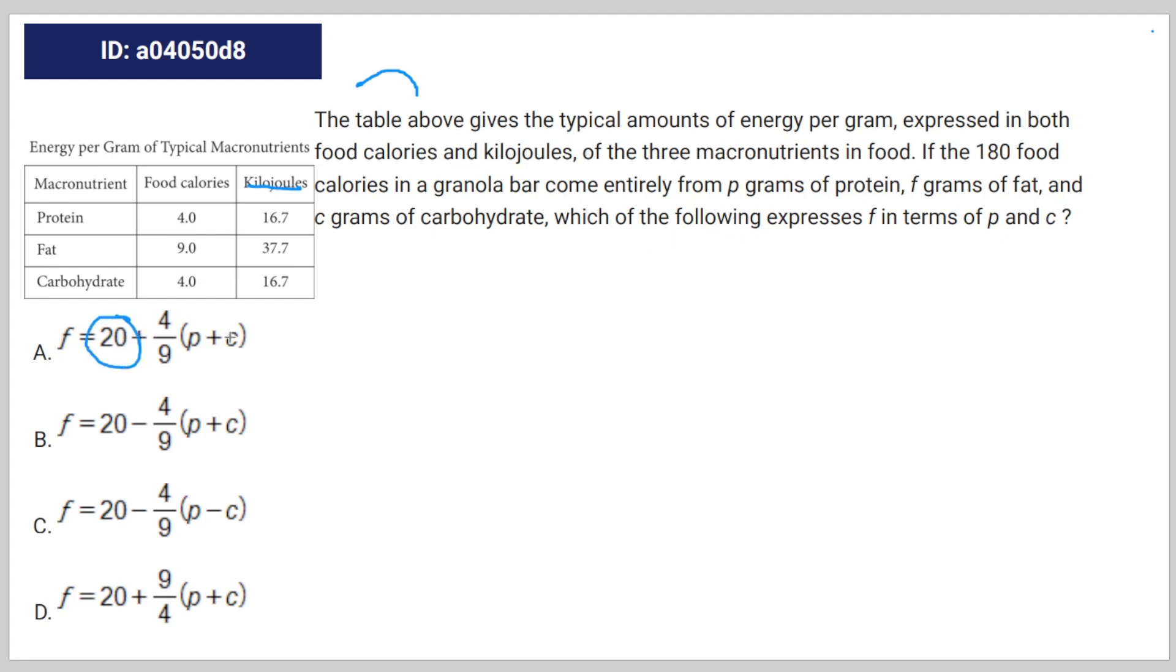So I'm guessing we're gonna have to write 180 like this. And then, okay, so per gram of typical macronutrient you get this amount of food calories, so it's going to be 4p...